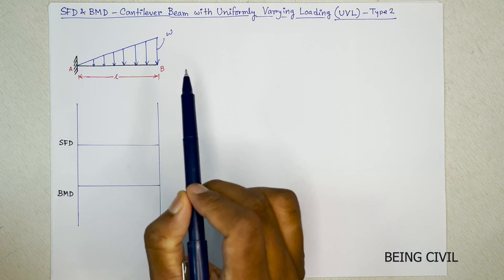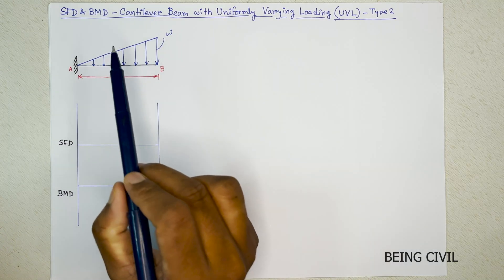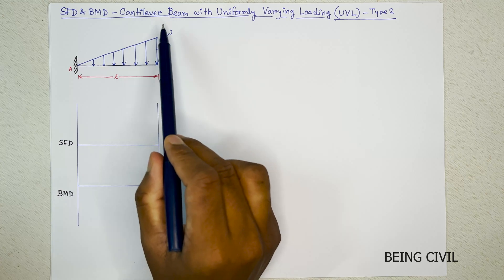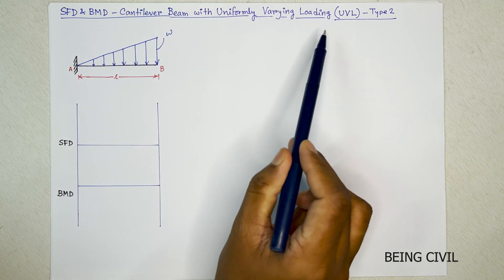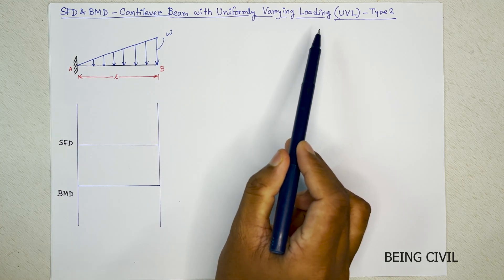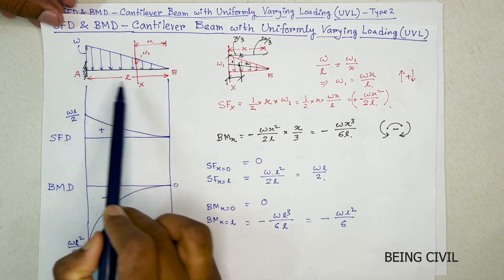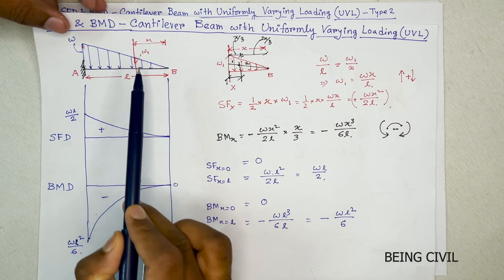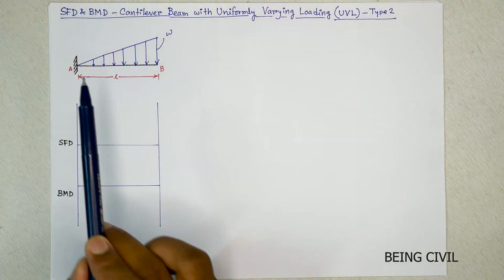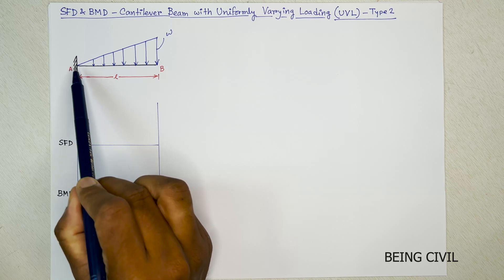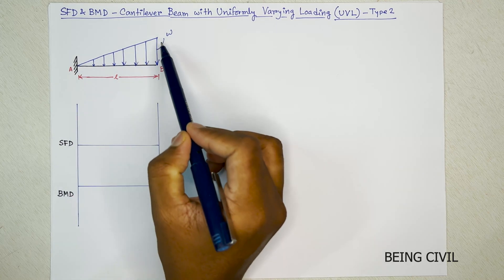Hello everybody, welcome to Being Civil. In this video we'll draw the shear force and bending moment diagram of a cantilever beam with uniformly varying loading. In the previous video we also had uniformly varying loading, but the type of force is different here — the uniformly varying load starts at zero at the fixed end and ends at w per unit length at the free end.